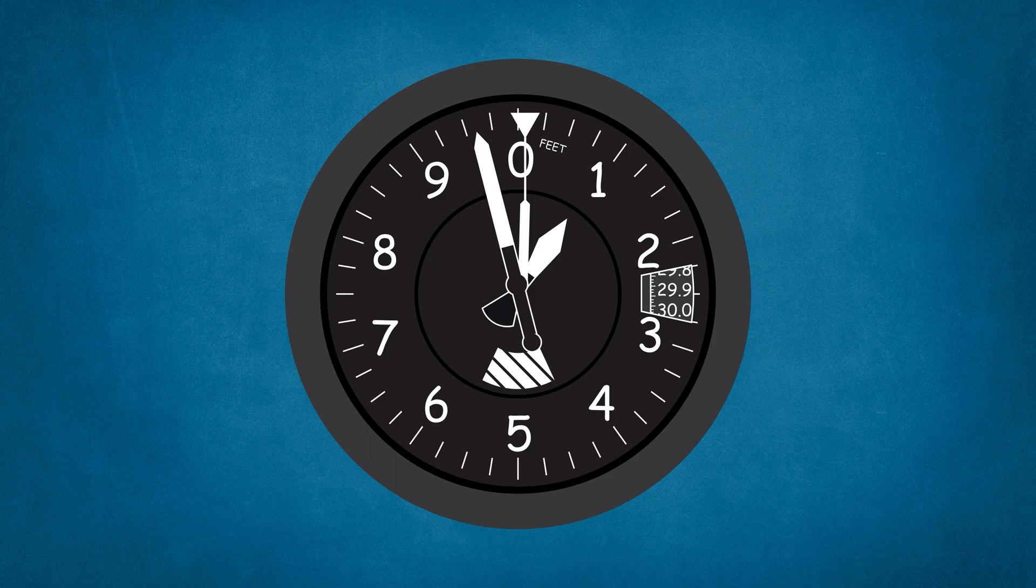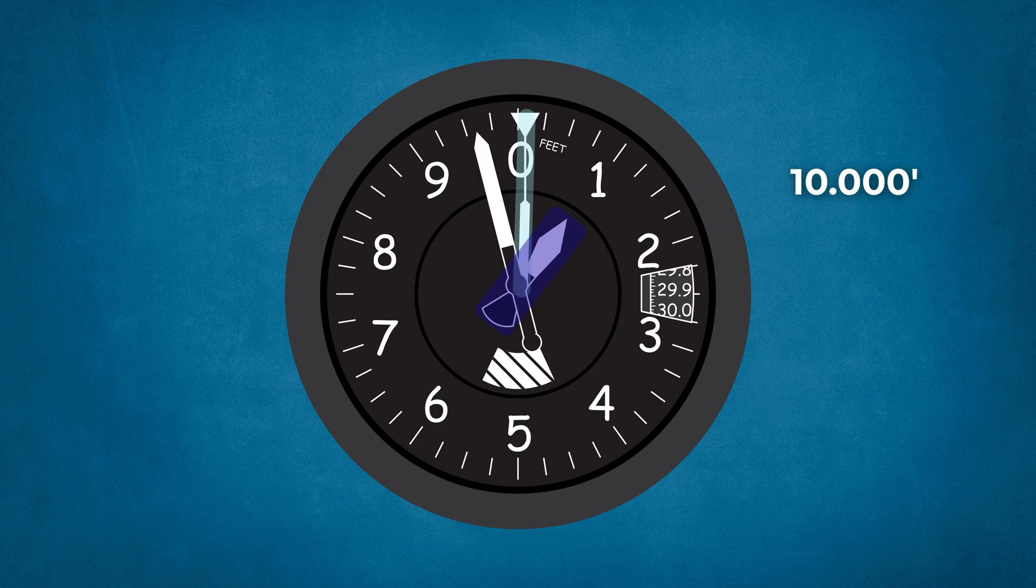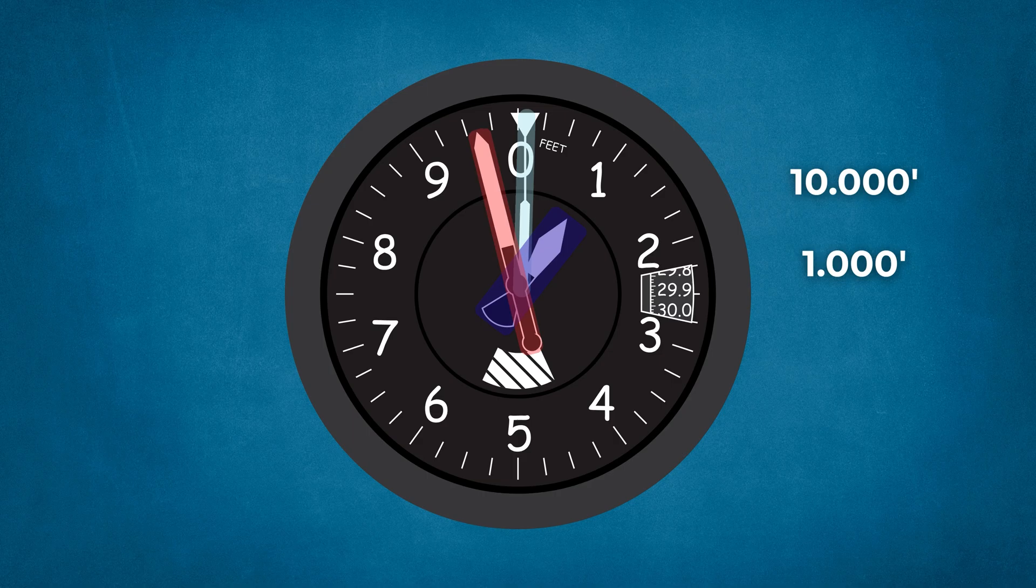Reading a standard three-hand altimeter is easier than you think. It's similar to a clock. The long pointer measures altitude in intervals of 10,000 feet. The short, wide pointer measures altitude in intervals of 1,000 feet. The medium, thin pointer measures altitude in intervals of 100 feet.